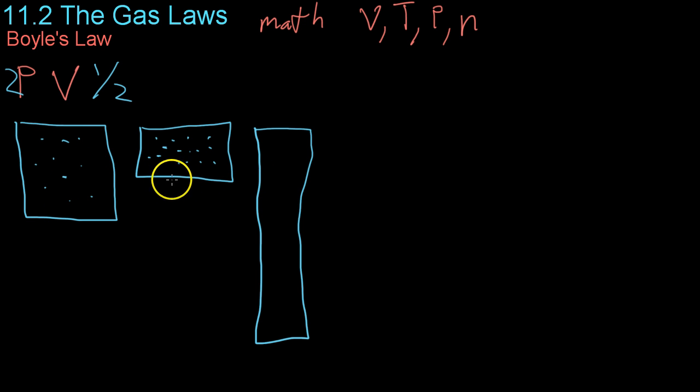And this is easy to understand because pressure is just force per unit area, and if you cut the volume down, you're getting more molecules per unit area, and therefore more collisions with this wall, and therefore more pressure.